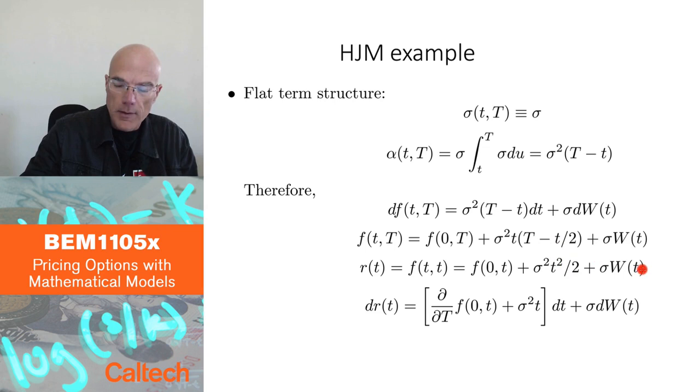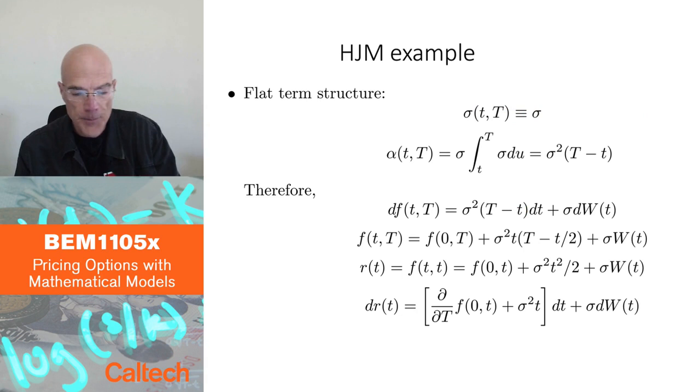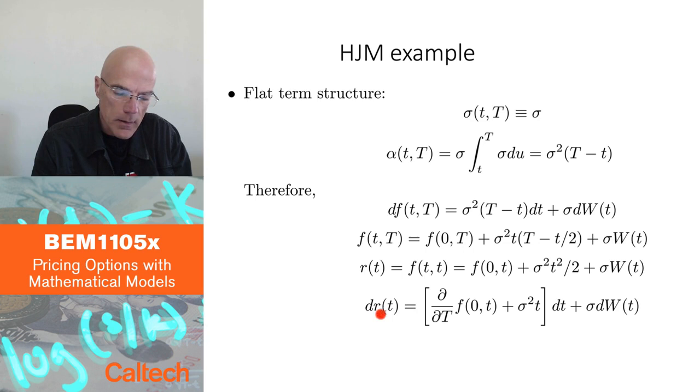So this is my short rate in the Heath-Jarrow-Morton model in which the volatility of the forward rates is constant. Well, let's see what happens if I write it in the differential form. I look at the dynamics, dr(t).